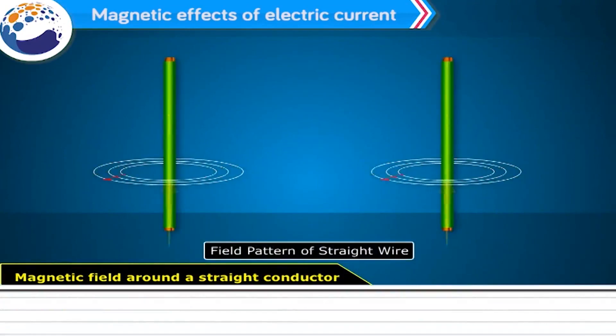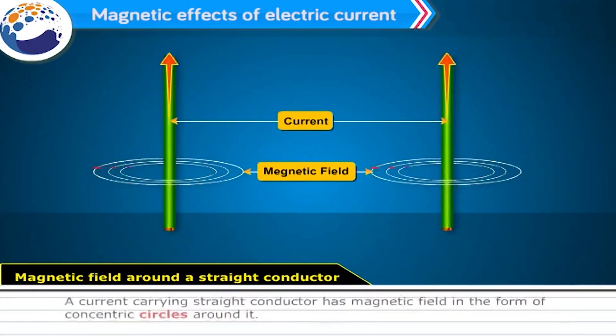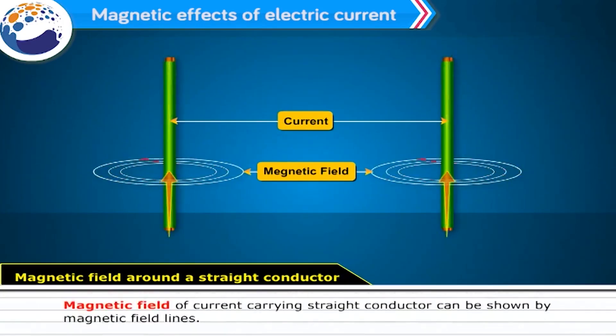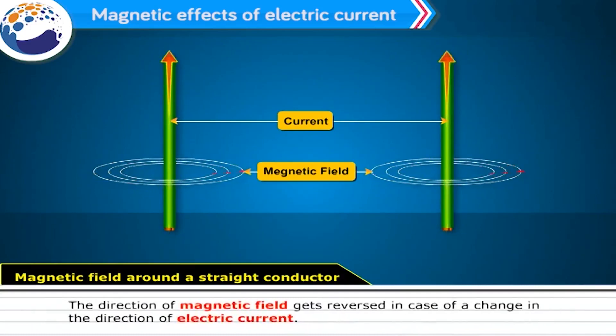Magnetic field around a straight conductor. The strength of the magnetic field created depends on the current through the conductor. A current-carrying straight conductor has magnetic field in the form of concentric circles around it. Magnetic field of current-carrying straight conductor can be shown by magnetic field lines. The direction of magnetic field through a current-carrying conductor depends upon the direction of flow of electric current. The direction of magnetic field gets reversed in case of a change in the direction of electric current.